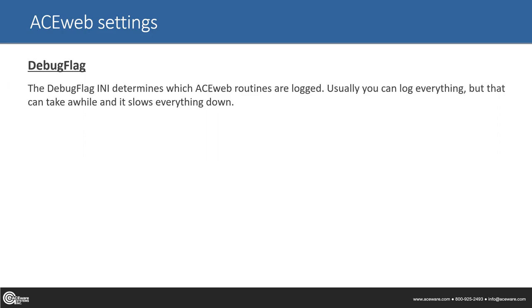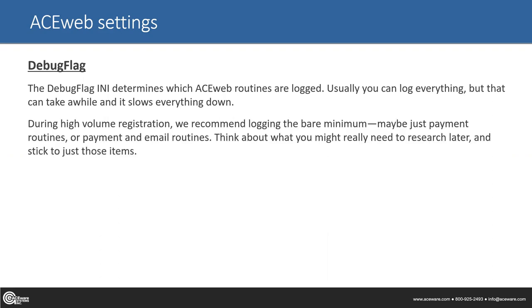The debug flag — just like extended logging in the Quick Pick INI logs all Quick Pick routines, the debug flag determines what ACE Web logs. These are going to be things like logon routines, adding courses to your cart, paying, whether an email is sent. We really recommend bare minimum logging. Sometimes this can come back to haunt you if you need to track something down and you weren't logging it because you were trying to give speed precedence. Payment routines are the big deals — if somebody registers and the payment didn't come through, you can ask your Aceware technician to check the debug log and help figure it out.